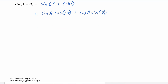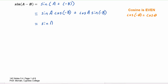Now we can use our negative angle identities. Recall that cosine of negative theta equals cosine theta, because cosine is an even function. So the first term becomes sine of a times cosine of b.